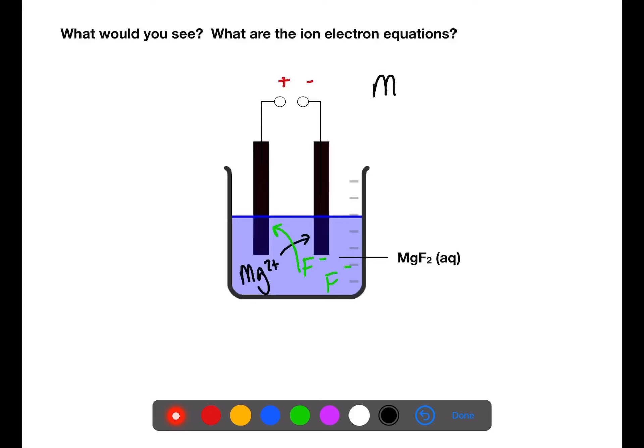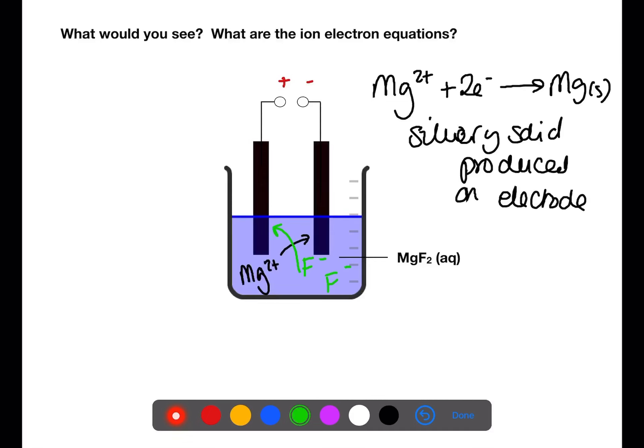At the negative electrode, the magnesium ions will pick up 2 electrons to become magnesium solid. You will see a silvery solid being produced. At the positive electrode, the 2 fluoride ions will lose 2 electrons and become fluorine gas. You will see bubbles of gas at the electrode.